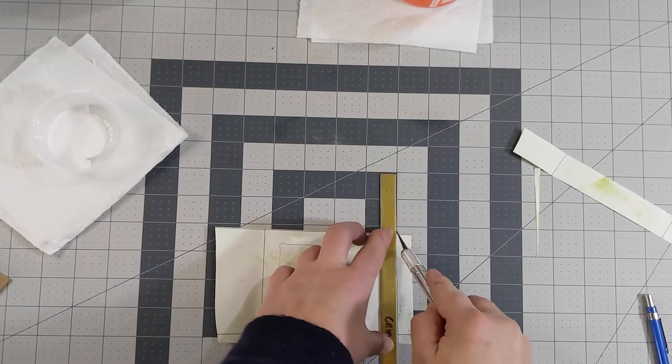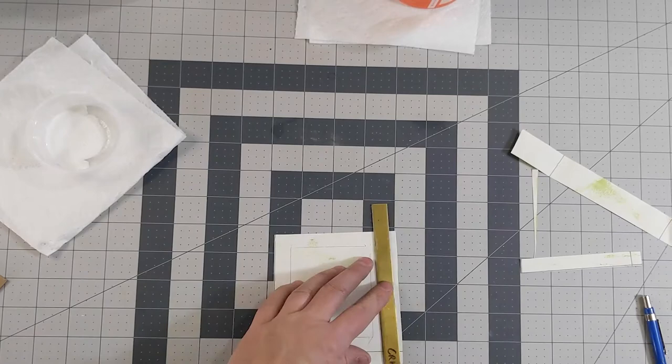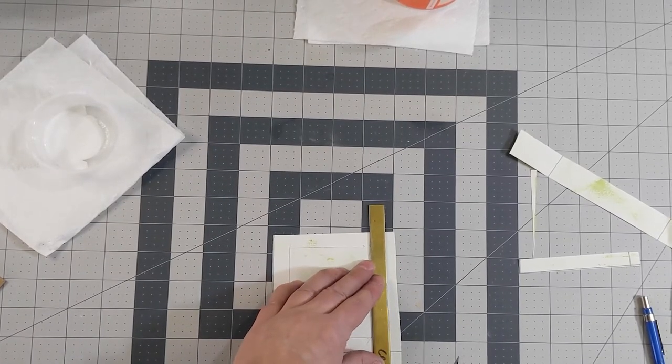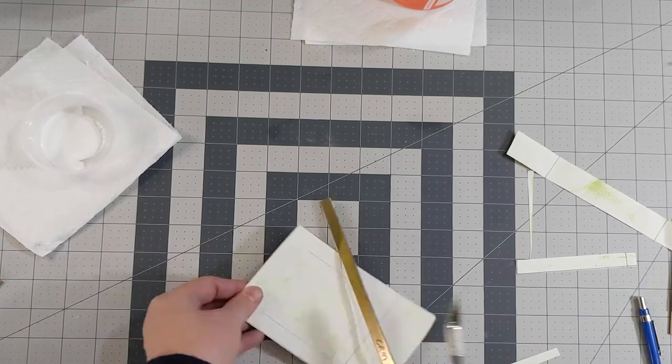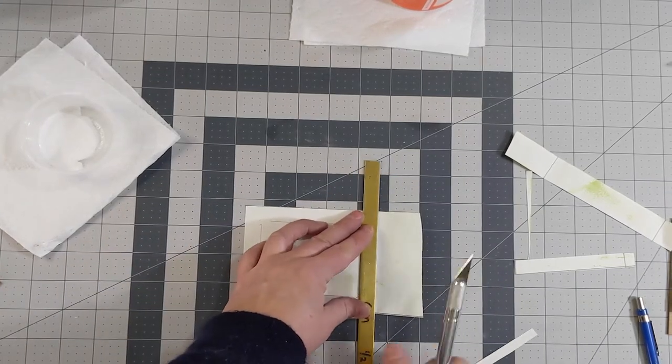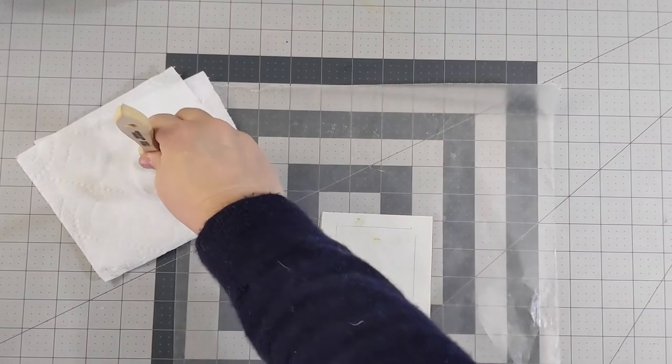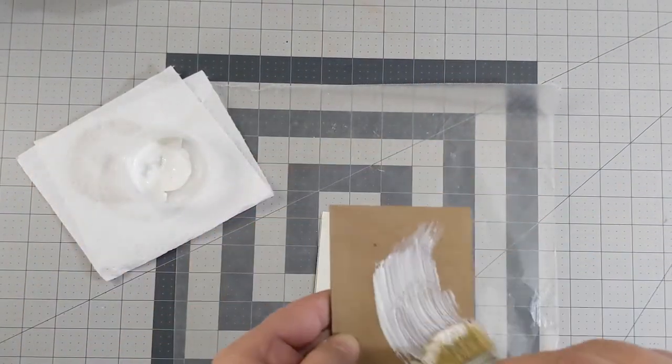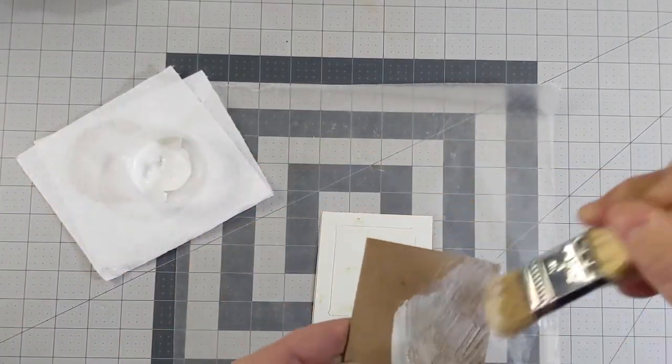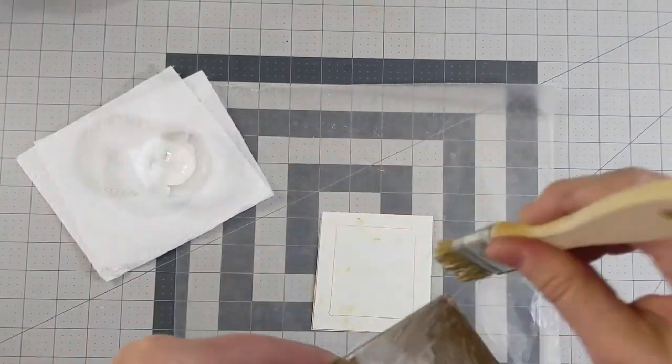Trim down your paper. Using the glue of your choice, in this case I'm using PVA, brush it onto the board in a fan-like direction from the center out, and then place it onto the cover paper.